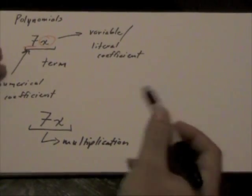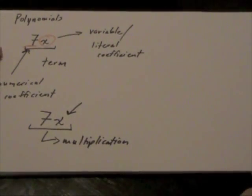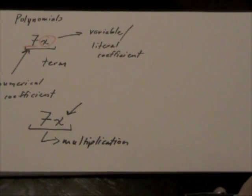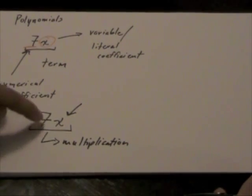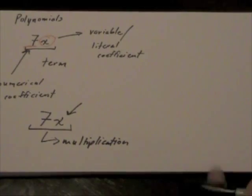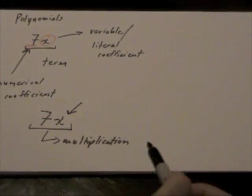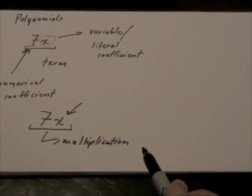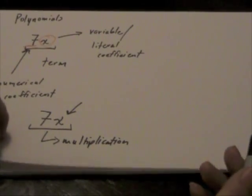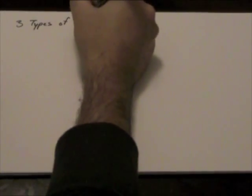So, in other words, if we knew what the value of this x letter is, we would multiply that value by 7. Otherwise, we leave this expression as 7x. Now, in terms of polynomials, there are three types of polynomials.